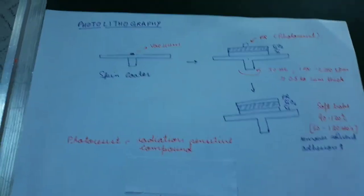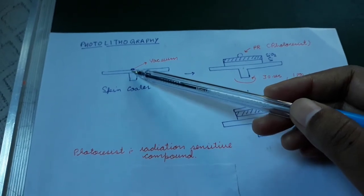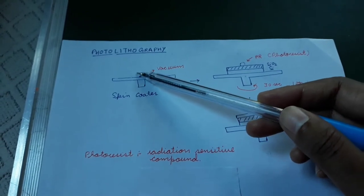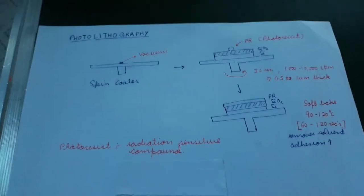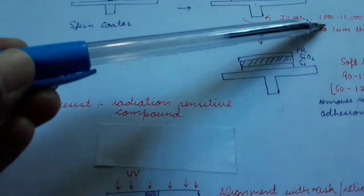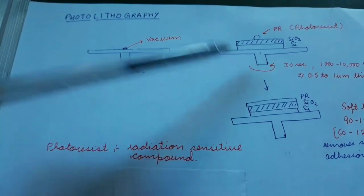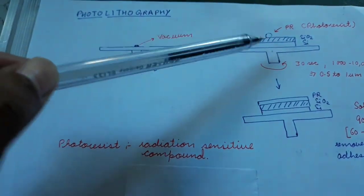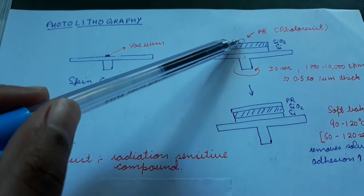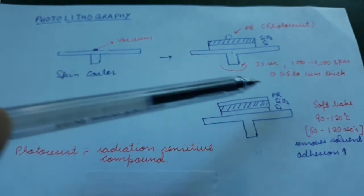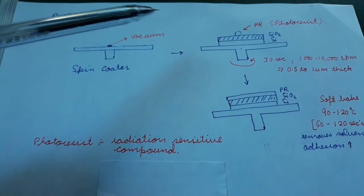Now let's understand how photolithography is done. First, on a spin coater — which has small holes connected to a rotary pump creating a vacuum — the substrate sticks to the surface. A drop of photoresist is dropped on the surface of the wafer, which in this case is coated with SiO₂, depending on whether you require photoresist deposited on SiO₂, silicon, or a metal film. Then the wafer is spun at a speed of around 1000 to 10,000 RPM.